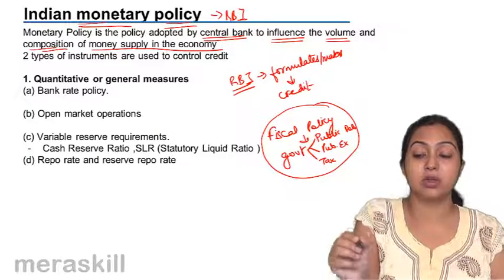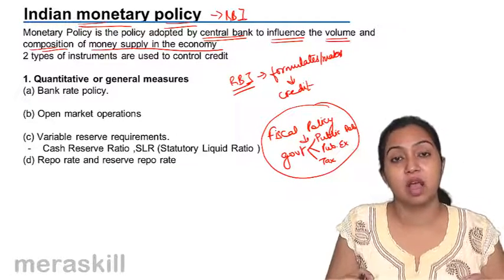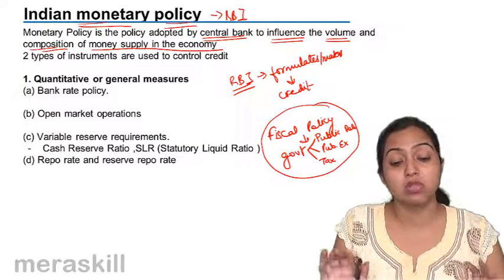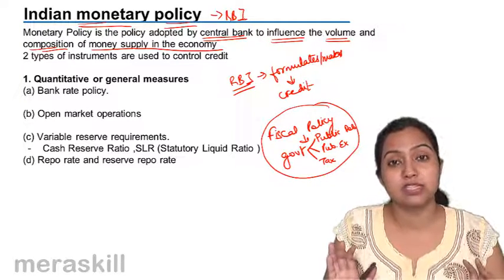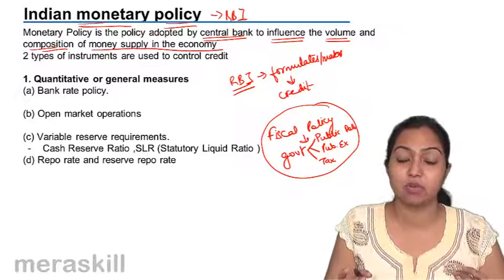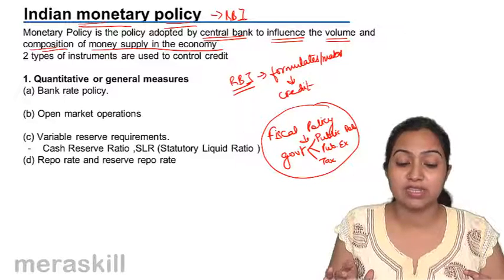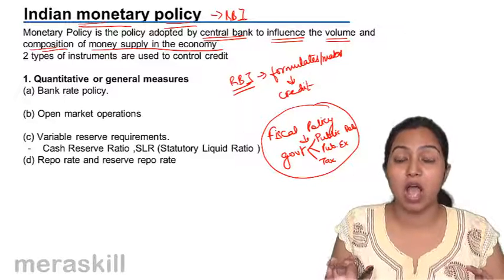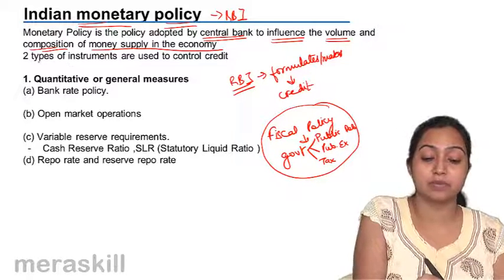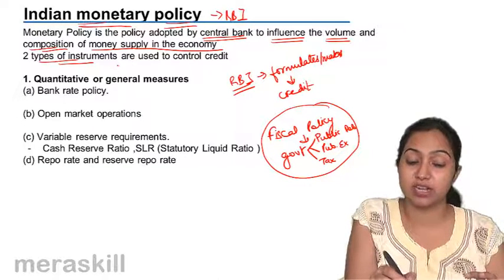This is a question which you are often asked: who makes the monetary policy — RBI, government, local bodies? Monetary policy is made by RBI, and the government formulates the fiscal policy. The main purpose of monetary policy is to control credit, and there are two types of instruments used for that.